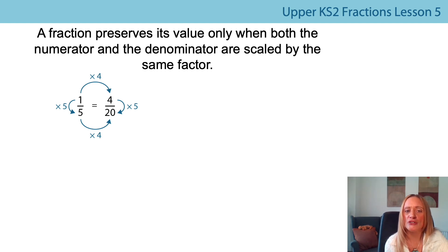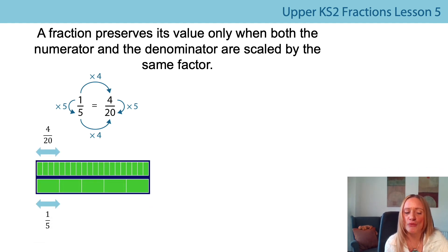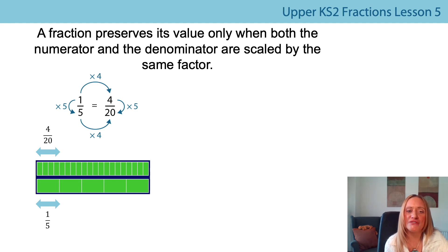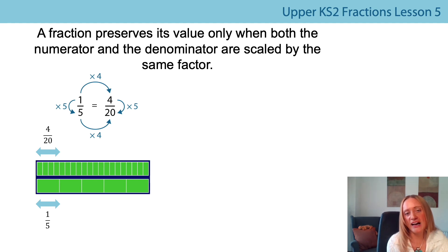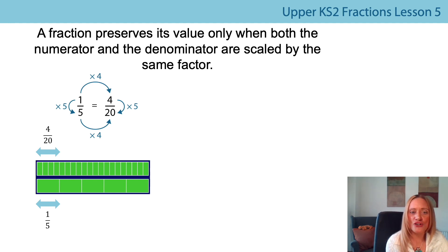Did you get something like this? On the bottom bar, the whole has been divided into five equal parts and I can see one of those parts. On the top bar, the whole has been divided into 20 equal parts and four of those parts is the same proportion of the whole. We can see those multiplicative relationships are the same — horizontally they've been scaled by a factor of four, and vertically they've both been scaled by a factor of five. So as long as we preserve the scale factor, we will preserve the value of that equivalent fraction.